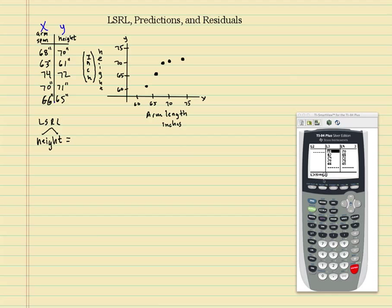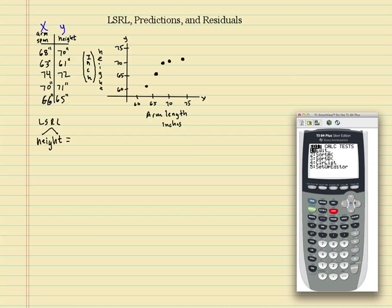All right, so now that we have our data in there, let's go ahead and find all of our data. To find our slope and our y-intercept, you want to hit STAT, arrow over to the right to CALC, and you want to hit 8. Now remember, our data is not in list 1, list 2 anymore. It's in list 3 and list 4.